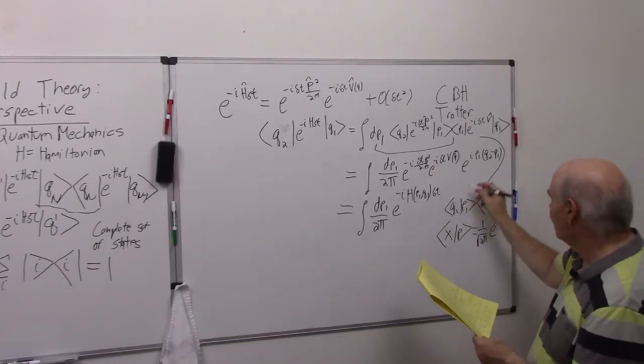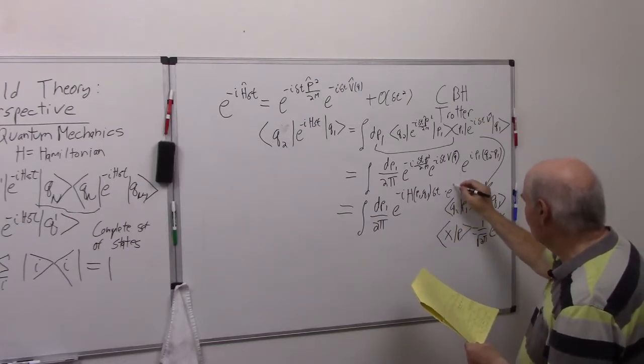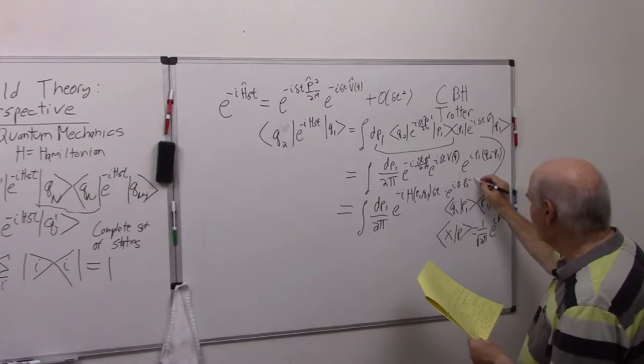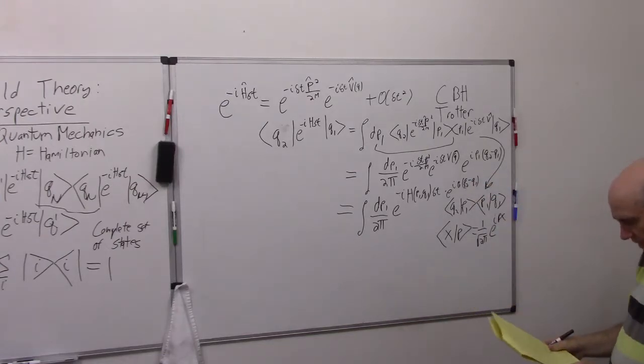And then I have this factor times e to the i p1, q2 minus q1. I know this is kind of messy, but okay. So having this equation here.